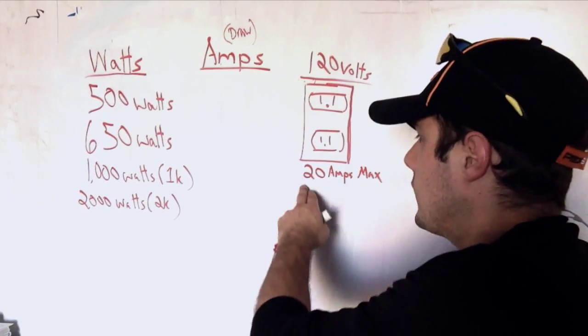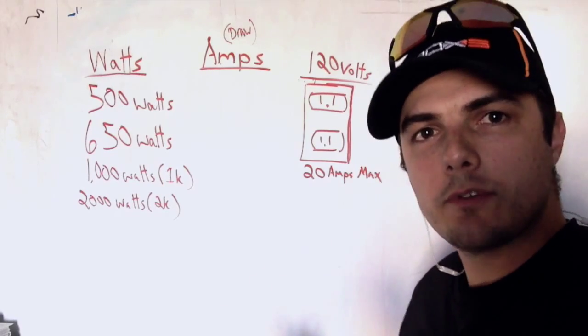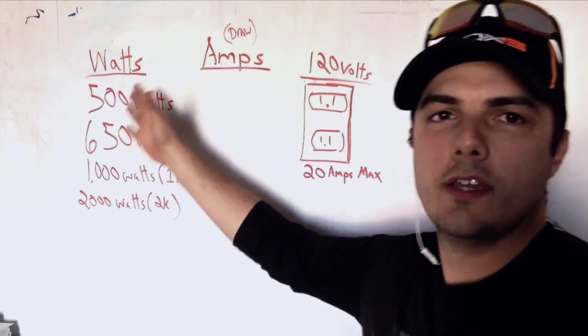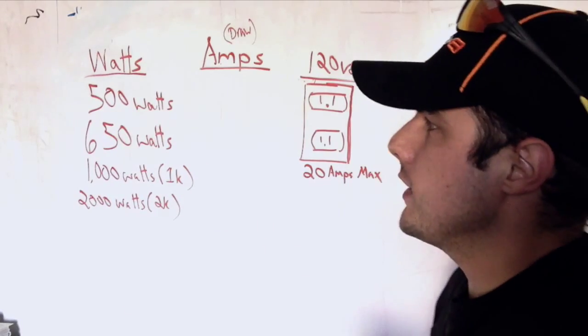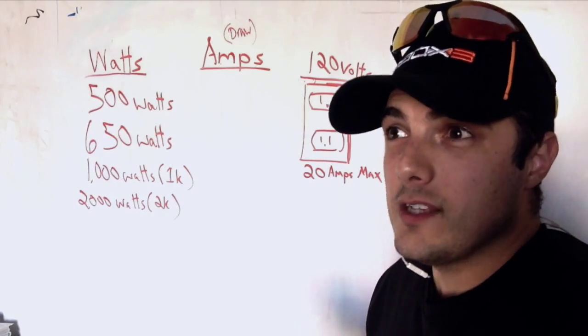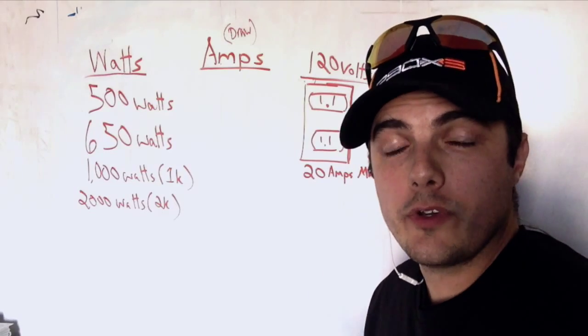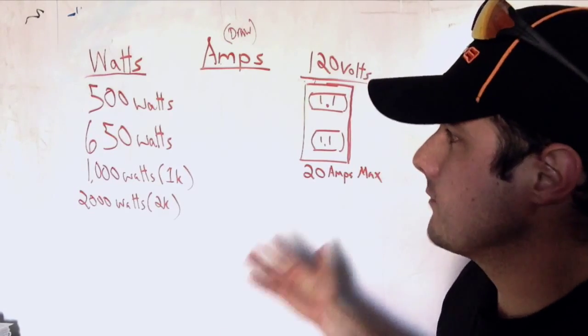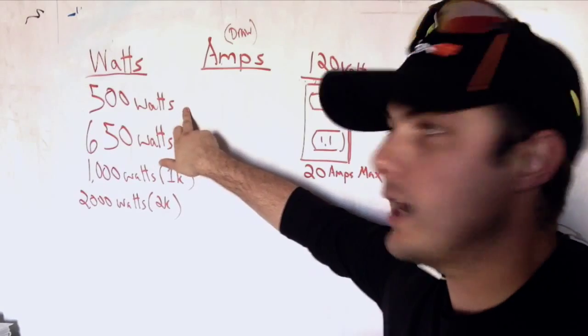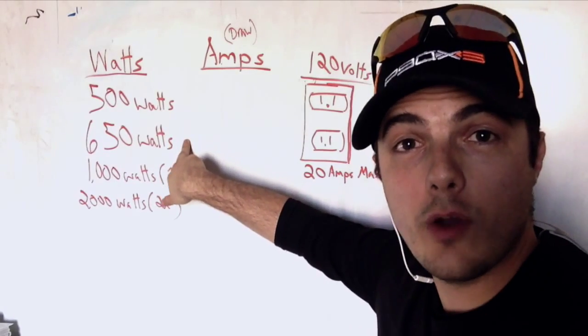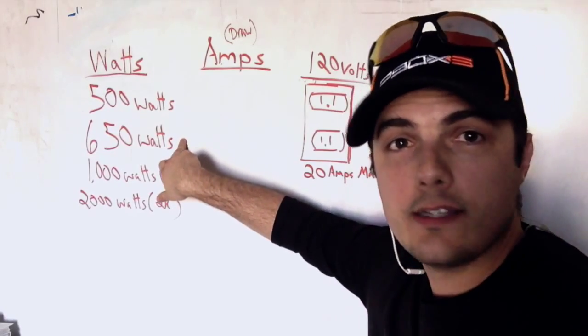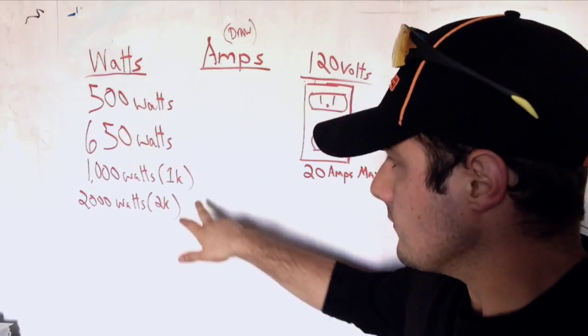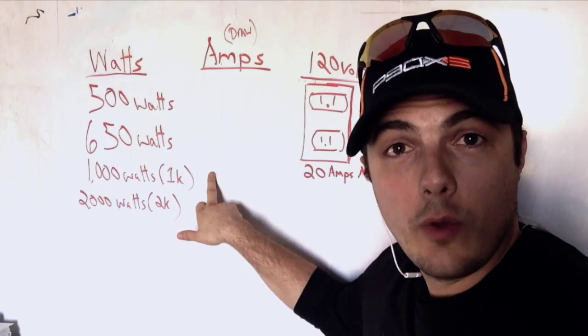So we're working with 20 amps max. I have 20 amps to work with. What does that mean when it comes to these lamps that are measured in watts? Now the cool thing is nowadays the watts are pretty minimal compared to what we used to use back in the day. Some popular wattages are 500 watts for the work lamps, 650 watts for the ARRI 650s which are popular lamps.